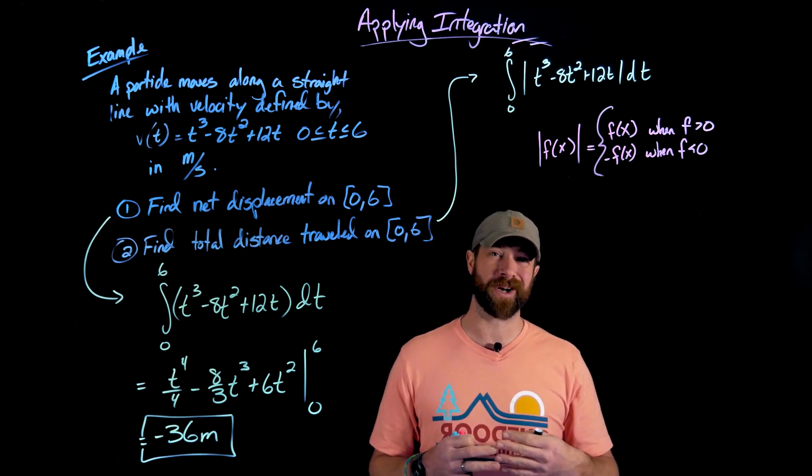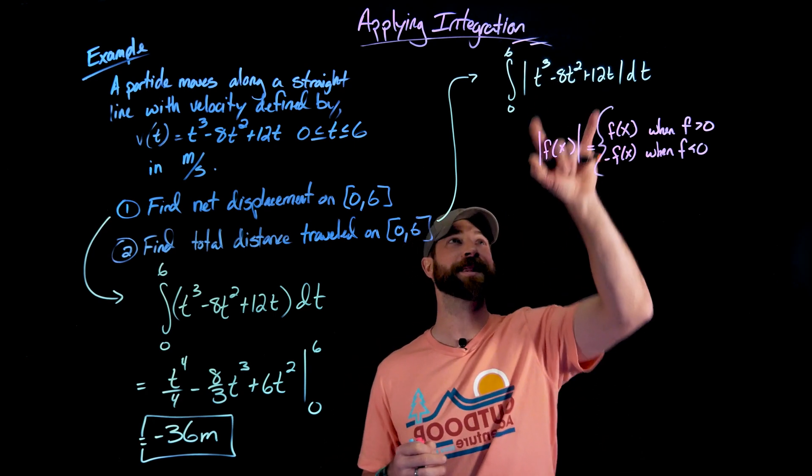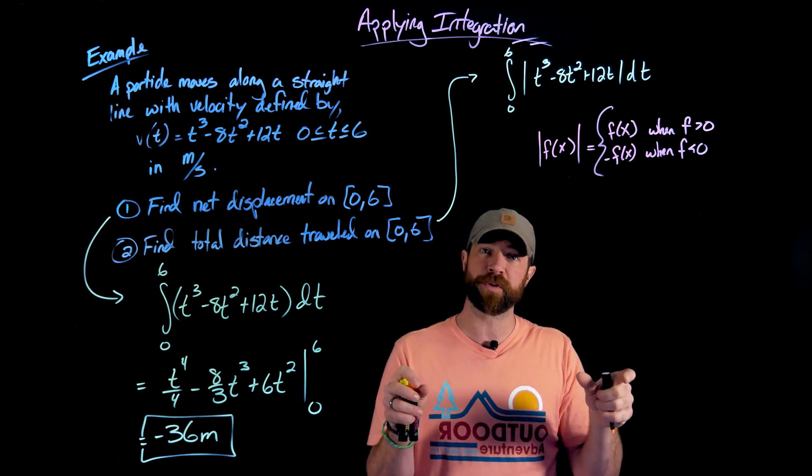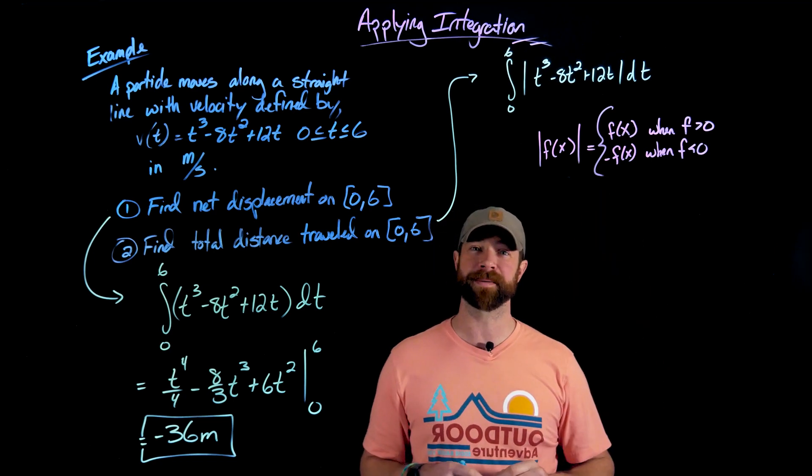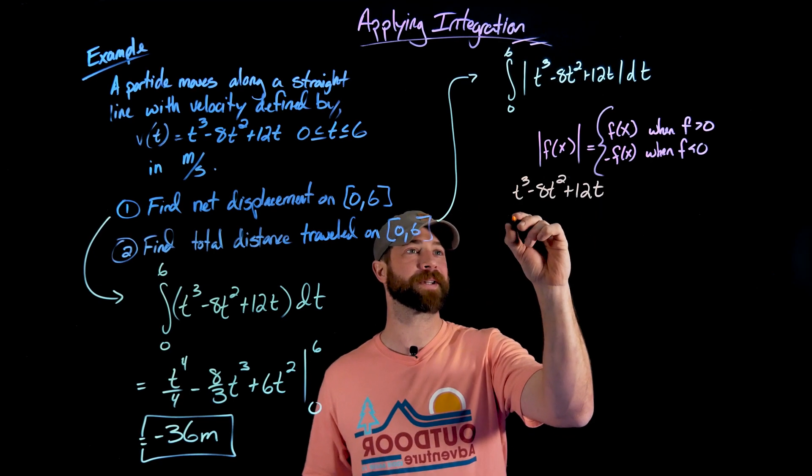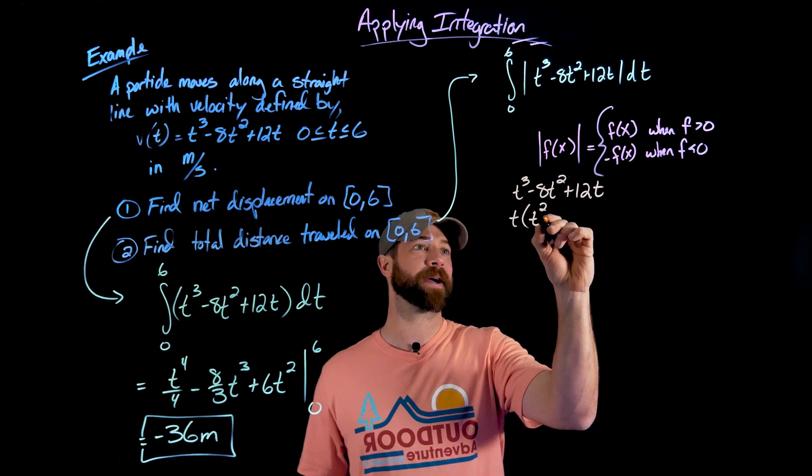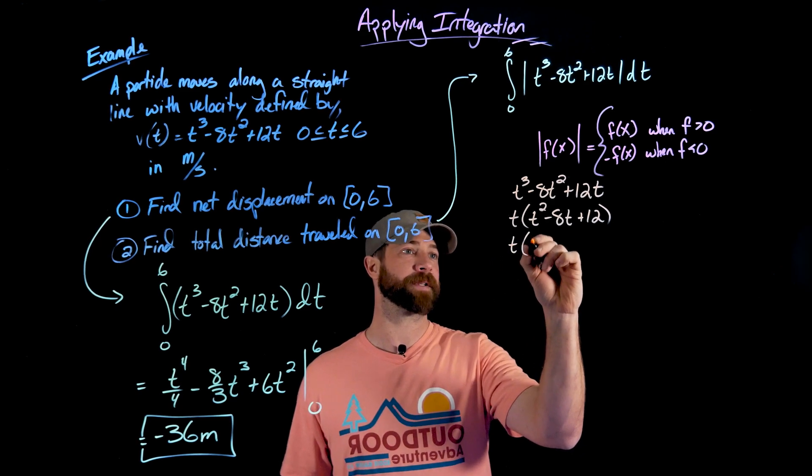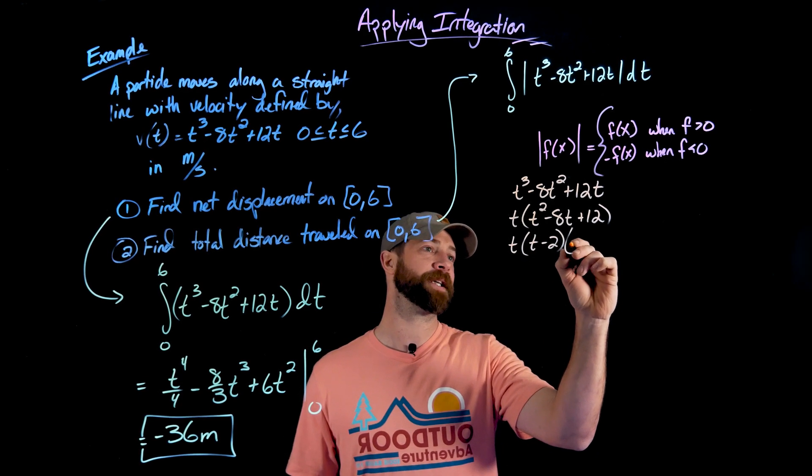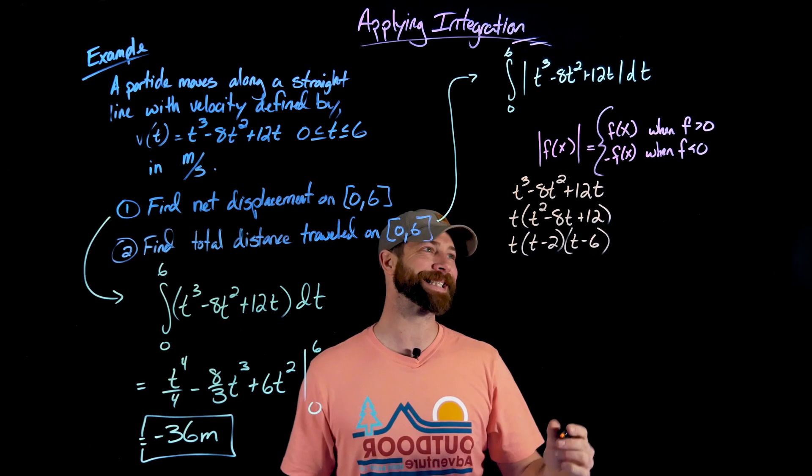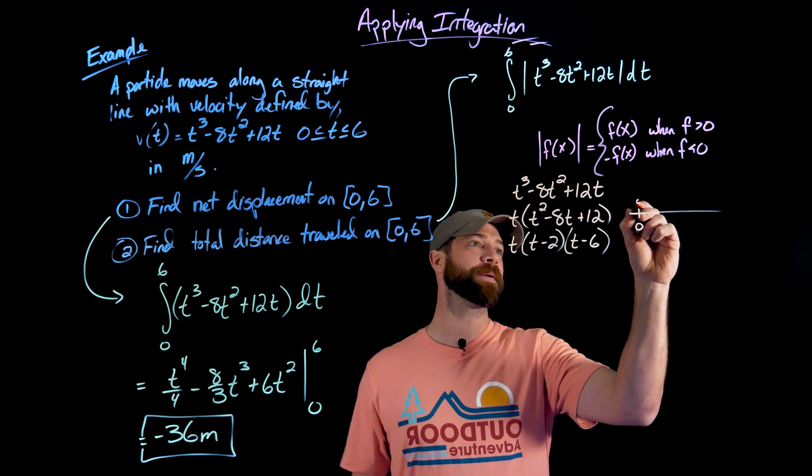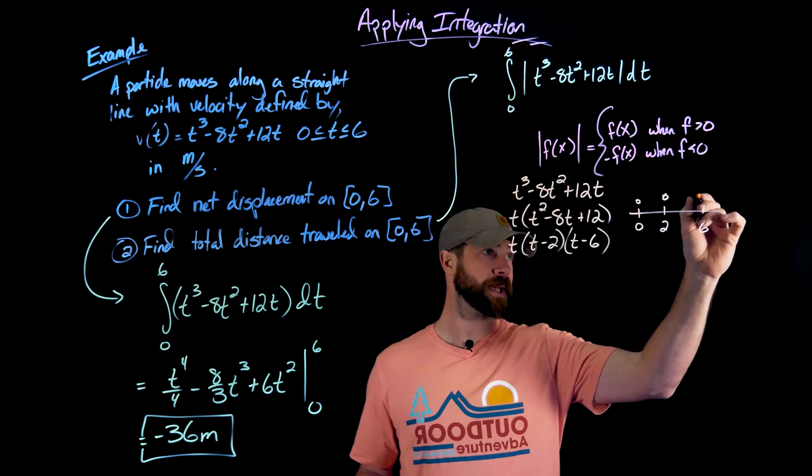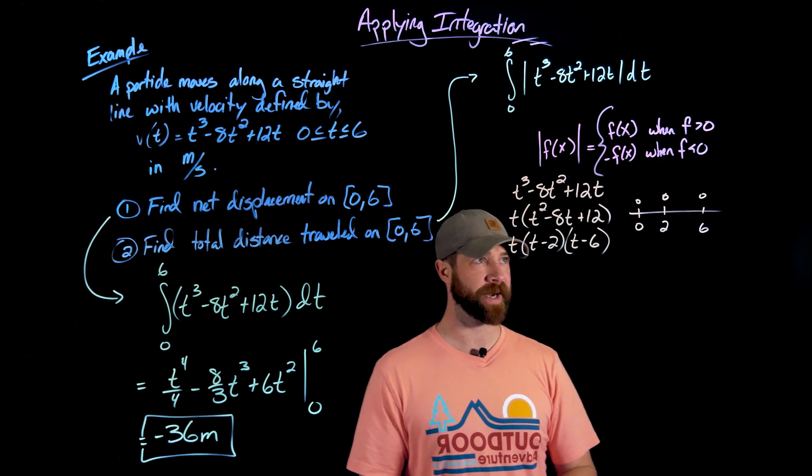So then what we're going to do, we did this a lot in differential calculus, is we now need to find out when this function is positive and when it's negative. And then we're going to split up this integral over the two intervals when it's positive and negative, and make this adjustment. So what I'm going to do is just factor this and find the zeros. If I couldn't factor, I obviously could use other techniques to find these zeros. But this has been set up to be nice for us. This just factors into t times t minus 2 times t minus 6, giving us, we have a 0 at 0, and at 2 we have a 0, and at 6 we have a 0.